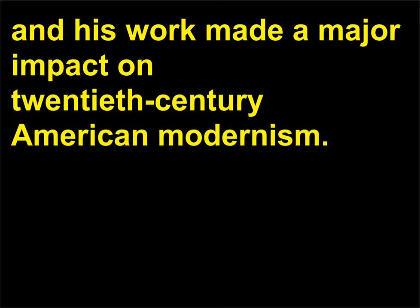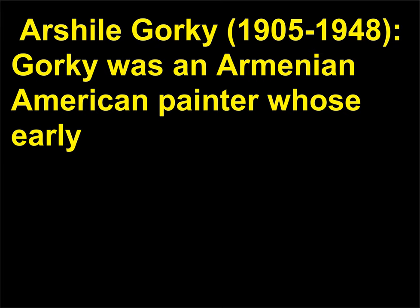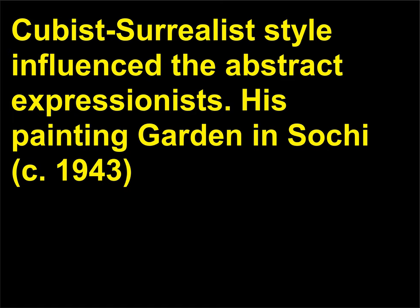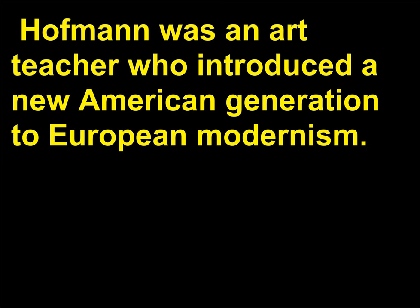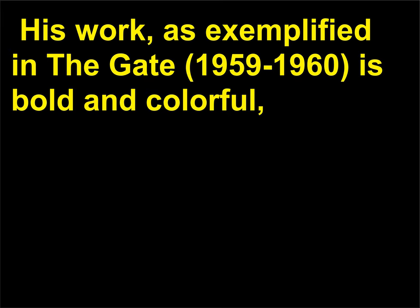Arshile Gorky (1905–1948): Gorky was an Armenian-American painter whose early Cubist-Surrealist style influenced the abstract expressionists. His painting Garden in Sochi (c. 1943) shares similarities with the biomorphic abstraction of Henry Moore. Hans Hofmann (1880–1966): Born in Germany, Hofmann was an art teacher who introduced a new American generation to European modernism. His work, as exemplified in The Gate (1959–1960), is bold and colorful, and emphasizes visual structure and color relationships.